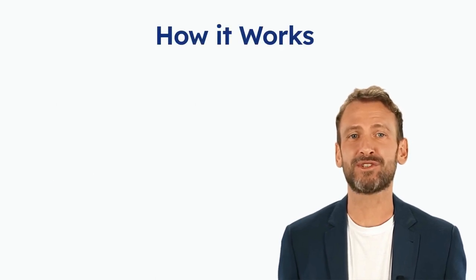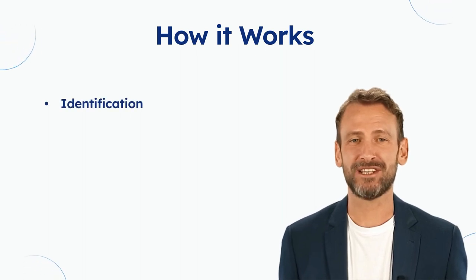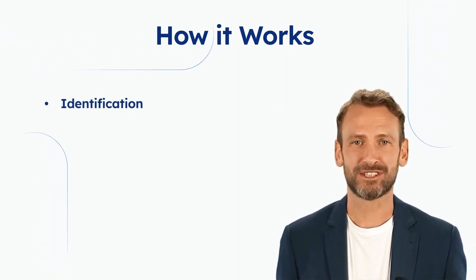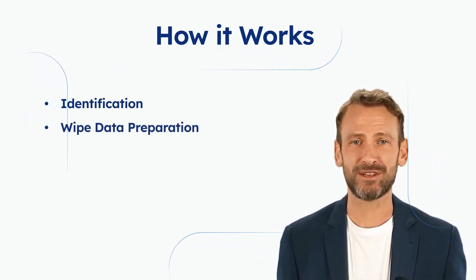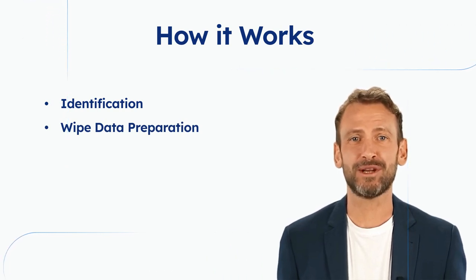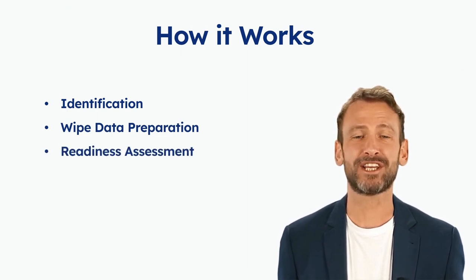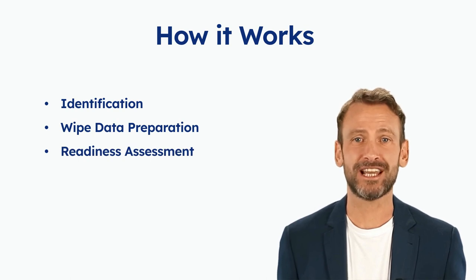How the Disposal Actionlytic process works. Identification: assets targeted for disposal are identified through specific collections, such as target and in-stores. Wipe data preparation: assets marked for disposal go through a process of data wiping preparation to ensure data security. Readiness assessment: assets deemed ready for disposal are moved to the ready-to-be-disposed collection.